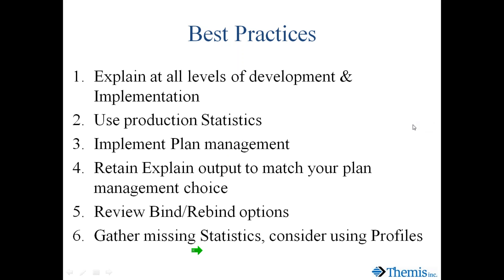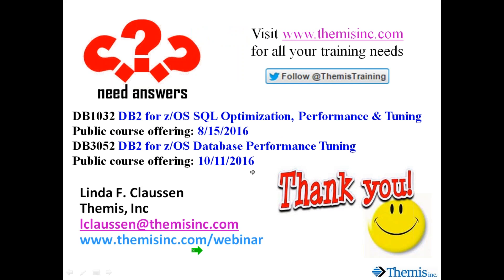In the Q&A: the new explain tables in version 11 and being able to control conflicting statistics more easily using RESET to clear out bad or conflicting statistics and get them refreshed — these are key improvements. Explain package came out in version 10 but was pretty well missed; not very many people were even aware of it.